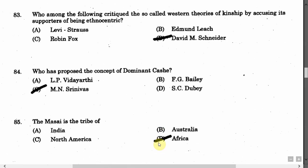The next question is: Who among the following critiqued the so-called Western theories of kinship by accusing its supporters of being ethnocentric? Option A: Levi-Strauss. Option B: Edmund Leach. Option C: Robin Fox. Option D: David M. Schneider. The correct answer is Option D.